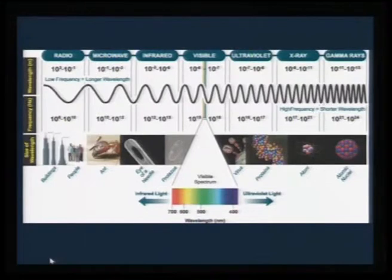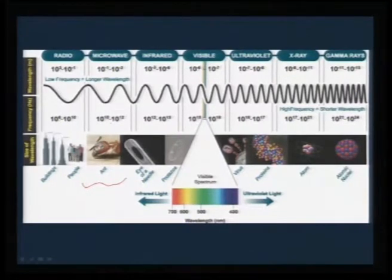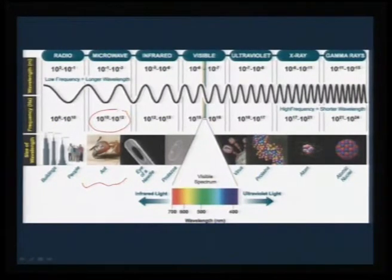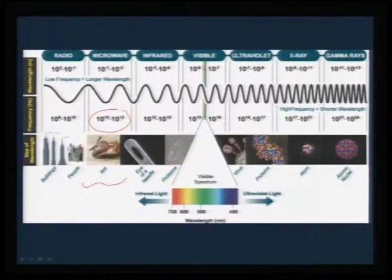Just to familiarize yourself where we stand in the electromagnetic spectrum — this is the microwave region, where the wavelength ranges from centimeter to millimeter, about the size of an ant. The frequency is of the order of 10^10 to 10^12 Hz, usually categorized under gigahertz or megahertz. It is one of the longer wavelength regions, sandwiched between radio waves and infrared, and several of these electromagnetic radiations can be used in the study of synthesis or spectroscopy of materials.